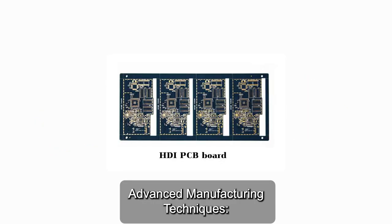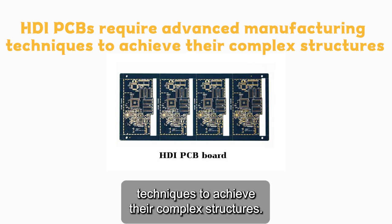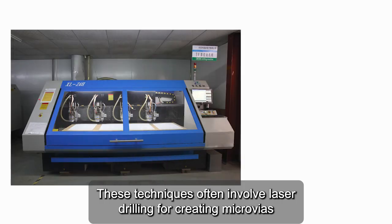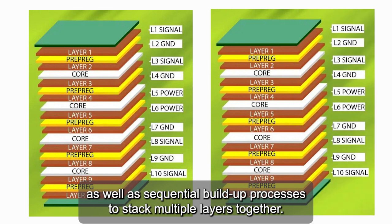Advanced Manufacturing Techniques. HDI PCBs require advanced manufacturing techniques to achieve their complex structures. These techniques often involve laser drilling for creating microvias, as well as sequential build-up processes to stack multiple layers together.